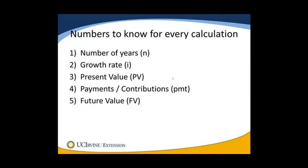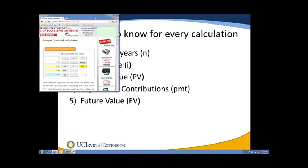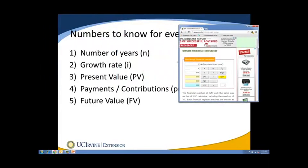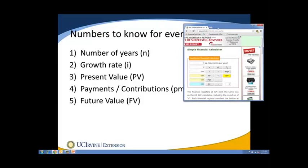Let's talk about the different numbers we will need to know for every calculation. N stands for the number of years. I is the growth rate, the inflation rate, or any sort of rate of return. PV stands for present value — the money we will be starting with, if any. PMT stands for payments, contributions, withdrawals, additions, or subtractions. And FV is future value — the number we want to end up with.